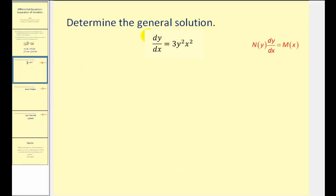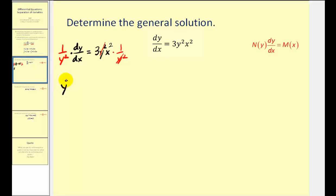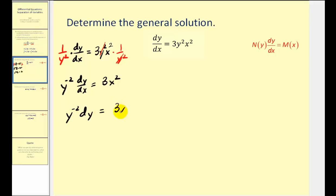We want the y part on the left side with dy/dx, so we'll multiply both sides of this equation by one over y squared. On the right side, the y squared simplifies out, and on the left side, we rewrite this as y to the power of negative two dy/dx equals three x squared. This does fit the form we're looking for, so let's rewrite this in differential form: y to the power of negative two dy must equal three x squared dx.